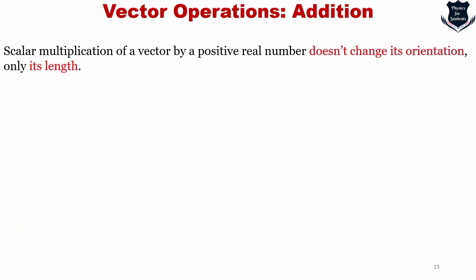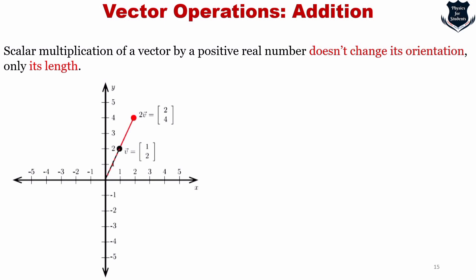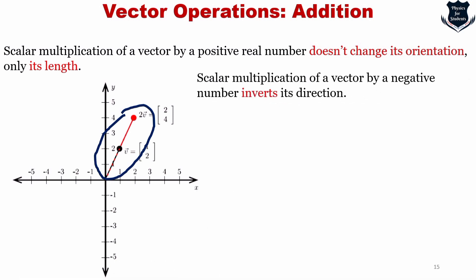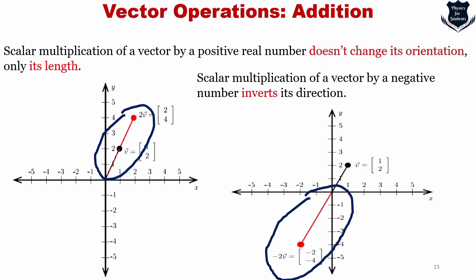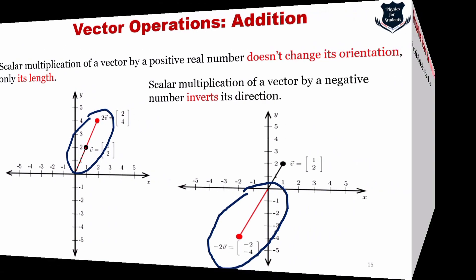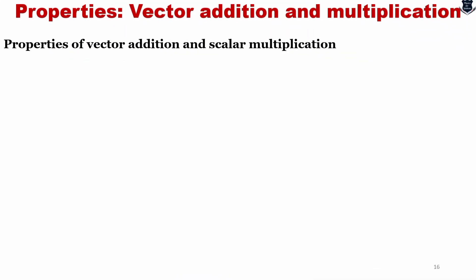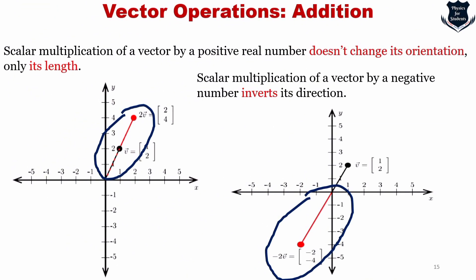Scalar multiplication of a vector by a positive real number does not change its orientation, only its length. For example, v = (1, 2) scaled to (2, 4) remains in the same direction. However, multiplication by a negative number reverses the direction — scaling to (-2, -4) points in the opposite direction.